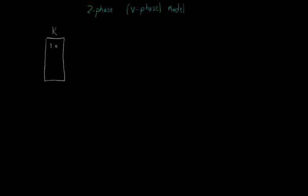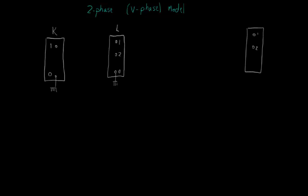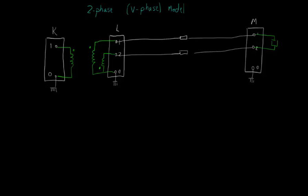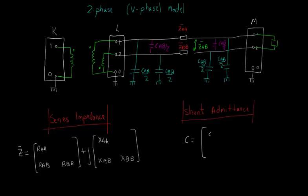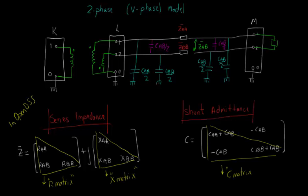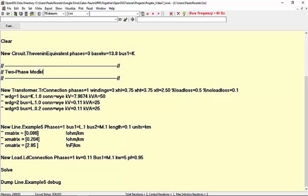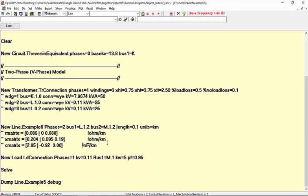Finally, with the same center-tapped transformer, suppose you want to supply a load with a line-to-line voltage. In this case, a line with two conductors is needed. This line has its first terminal connected to nodes 1 and 2 of bus L, and its second terminal connected to nodes 1 and 2 of bus M. The same applies to the load's connection. For this line, the R matrix, X matrix, and C matrix become 2x2 matrices. In OpenDSS, the line's first terminal is defined as L.1.2, the second terminal as M.1.2, and the load's bus1 parameter is defined as M.1.2 as well.